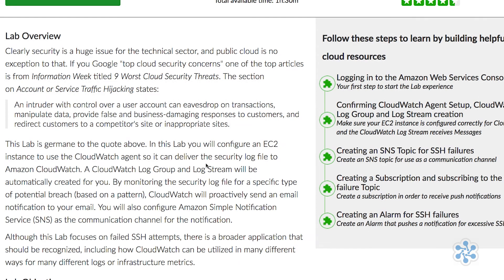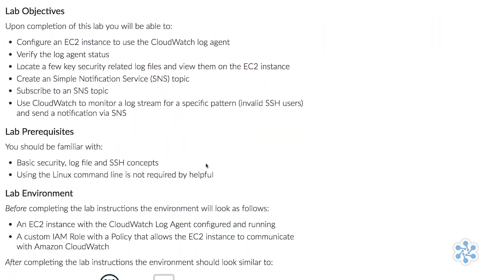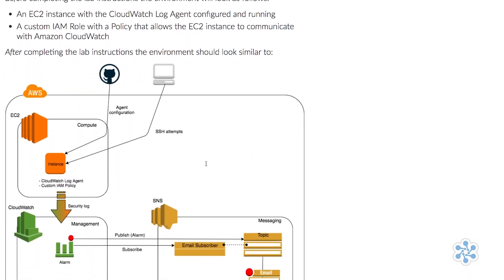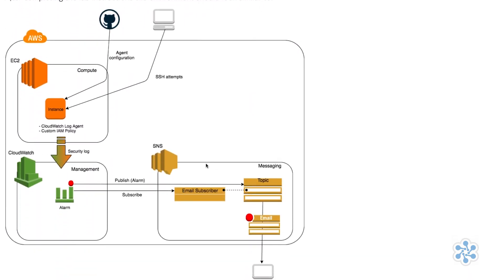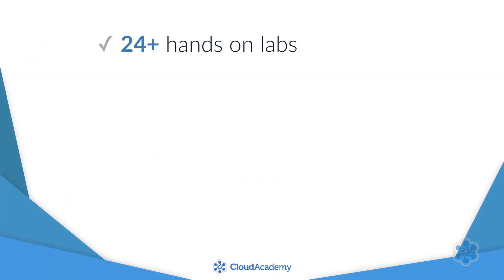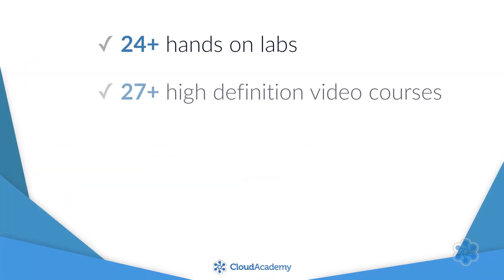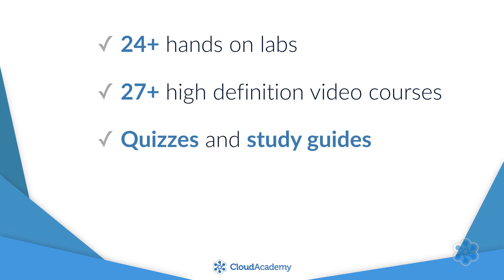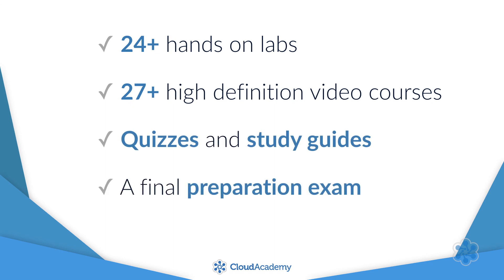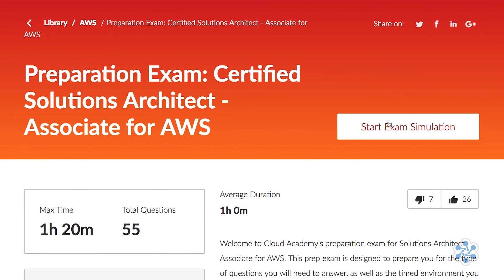This comprehensive learning path provides you with the knowledge and hands-on learning required to become an AWS certified solution architect. It provides you with 24 hands-on labs, 27 high definition video courses, preparation quizzes for each domain, a collection of study guides, and a final preparation exam.